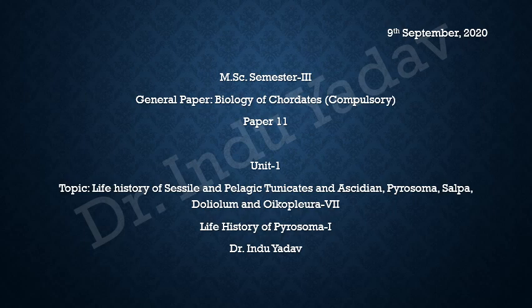Hello students, today we are going to start with the third animal, Pyrosoma, in paper 11 of biology of chordates, unit 1: life history of salp and pelagic tunicates and ascidians — Pyrosoma, Salpa, Doliolum, and Oikopleura. I have already done Oikopleura and Doliolum completely, and now I am coming to the third animal, Pyrosoma. This is the previous lecture of Pyrosoma; there will be one more lecture after this. So let's begin with Pyrosoma.